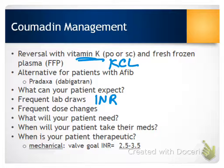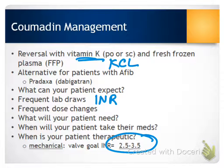Patients should take Coumadin in the evening because lab work is drawn in the morning, and the provider calls in the afternoon with any dose adjustment before the evening dose. This way the morning results are not affected and the evening dose can be changed if needed. For a patient with a mechanical valve, the general therapeutic INR goal is between 2.5 and 3.5, though this may vary slightly by provider and patient comorbidities.